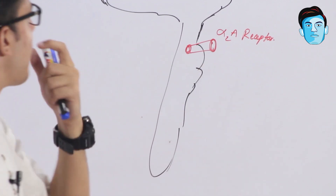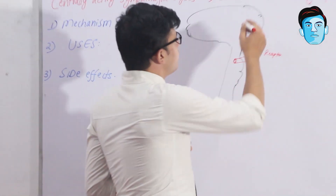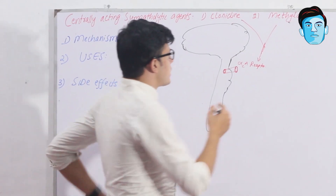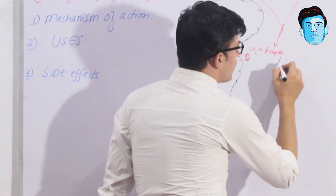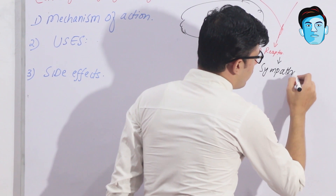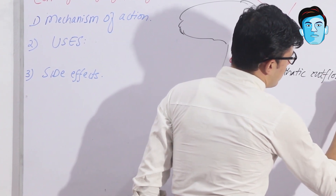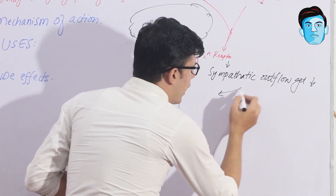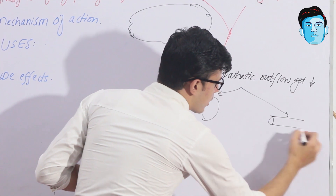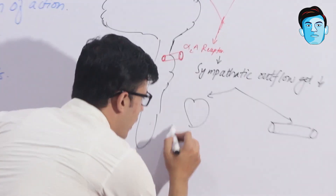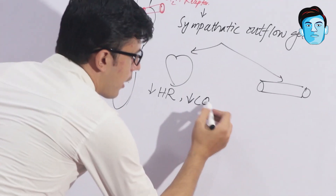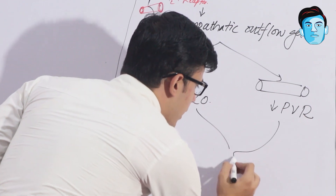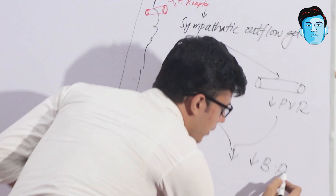Clonidine and methyl dopa act on the alpha-2a receptor and stimulate it. As soon as this receptor is stimulated, the sympathetic outflow decreases. When sympathetic outflow decreases, it acts on two areas: the heart and blood vessels. Acting on the heart, it decreases heart rate and cardiac contractility. Acting on blood vessels, it decreases peripheral vascular resistance. Both effects ultimately lead to a decrease in blood pressure.